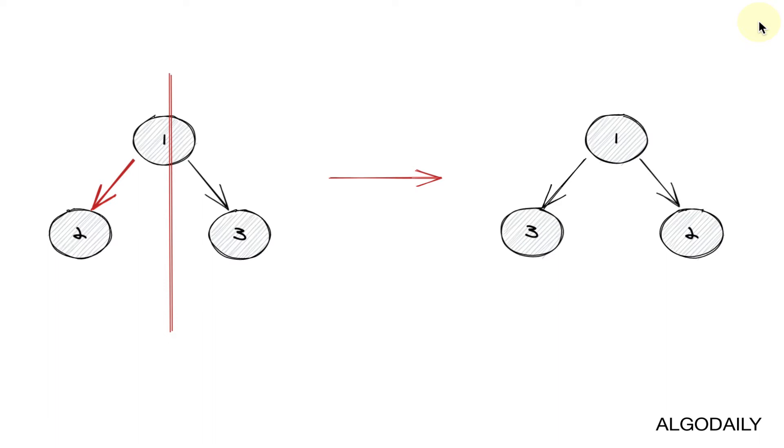To be fair, Max Howell has kind of walked back that tweet a little bit and he admitted that it was mostly out of frustration. But it's still good for you to know how to invert a binary tree regardless so you don't get it during an interview and then write an angry tweet about it.